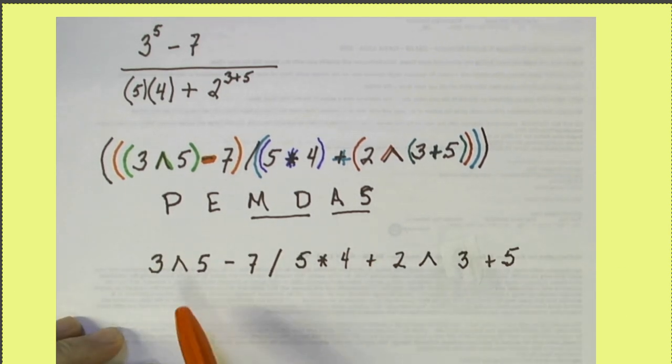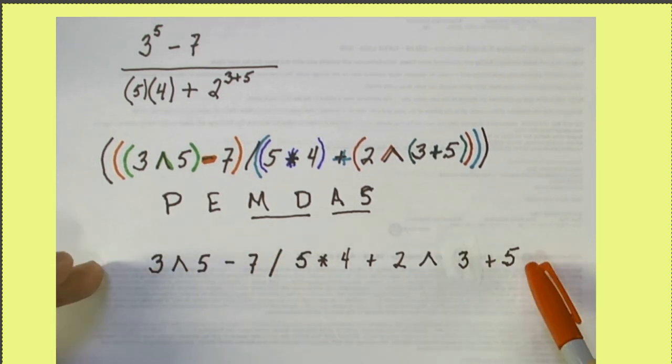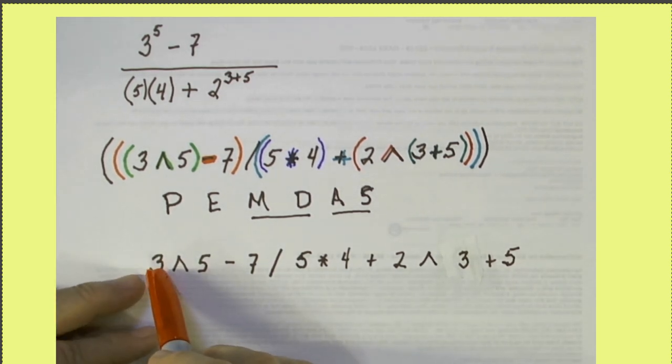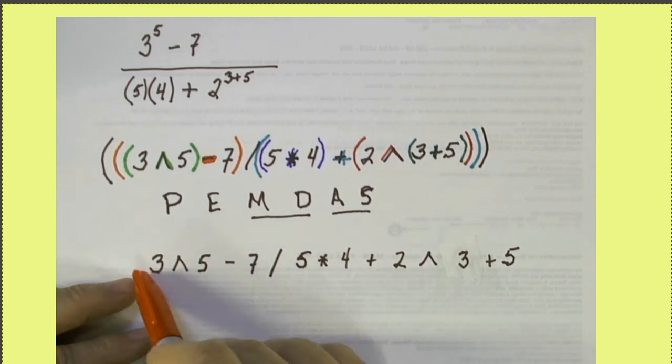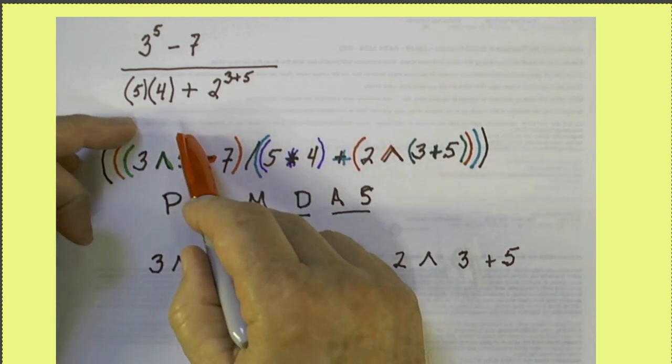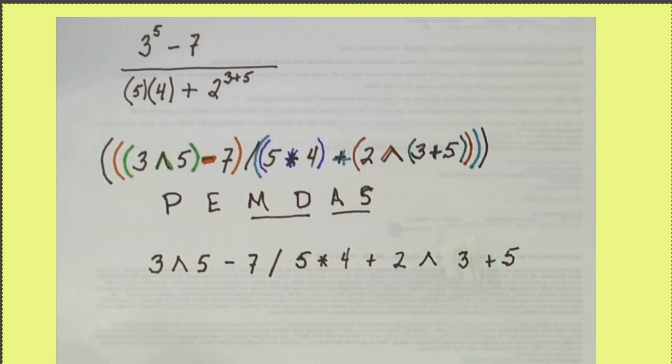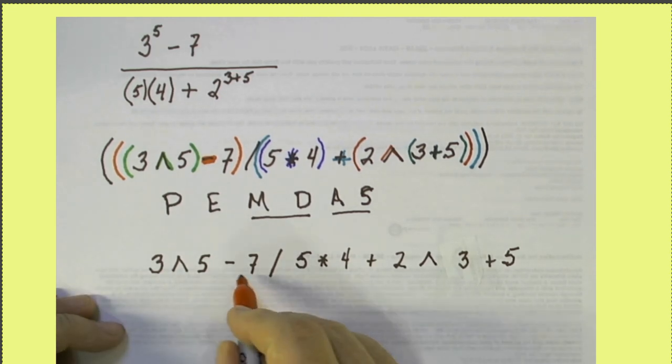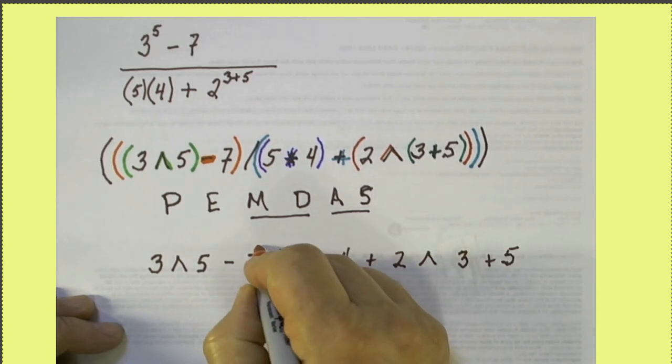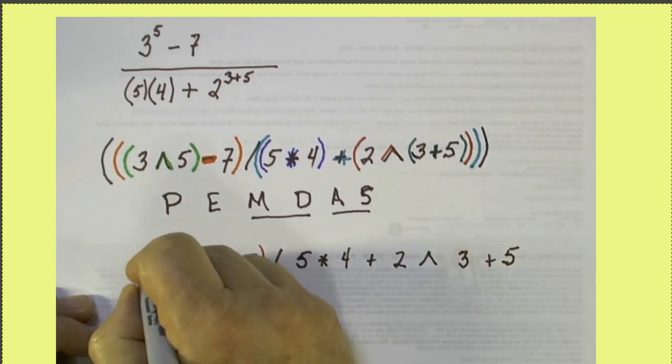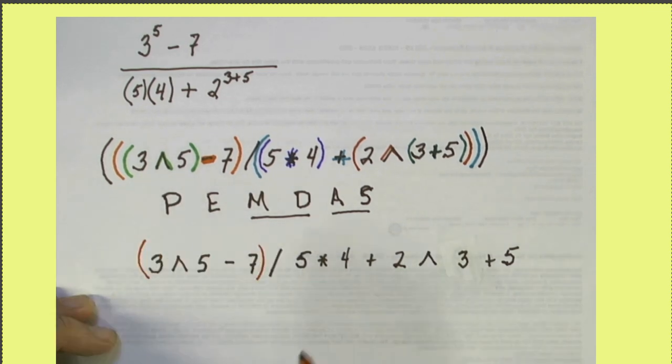Once we've agreed that we'll follow this order of operations, we can skip some of the parentheses. For example, as we read along here, the first thing that we're going to do are parentheses, there aren't any, and so the next thing that we worry about is exponents. So this is going to be done first, so we don't need that set of green parentheses. We do need, we don't want to do 7 divided by 5, so these parentheses are important to have in that situation.